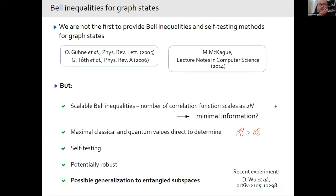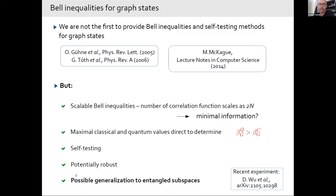Let me summarize. We have a good class of Bell inequalities for graph states. We are not the first to introduce such inequalities — there were previous papers — but our construction has some advantages: it is scalable. We are also not the first to prove self-testing statements for graph states, but our self-testing statements are based on scalable inequalities, which is a key advantage. We can easily compute both the classical and maximum quantum values, and provide self-testing methods for those states. We can also generalize this approach to entangled subspaces, though I don't have enough time to discuss that.